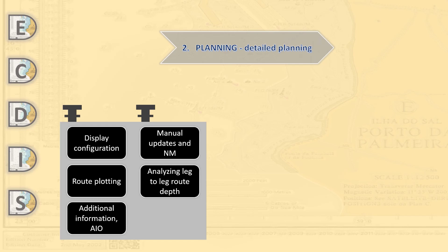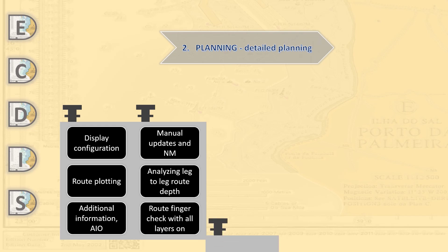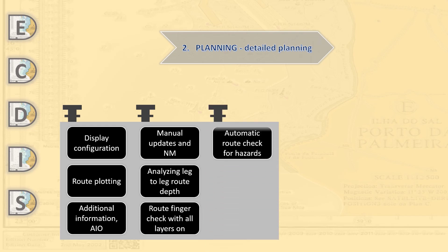Automatic route check must be implemented after manual analyzing. Then we have to adjust our route, making it better relative to the first appearance.